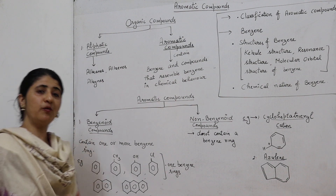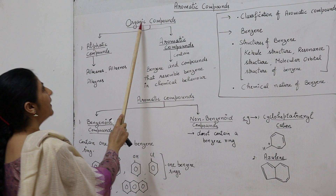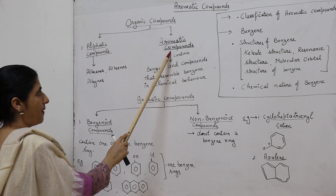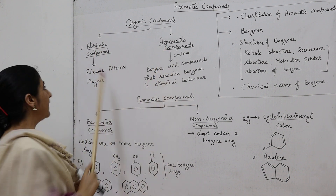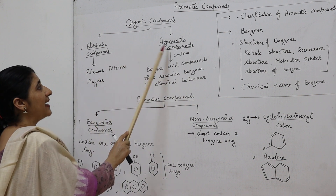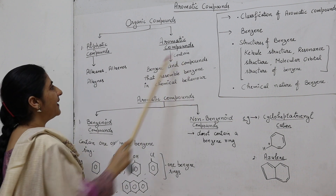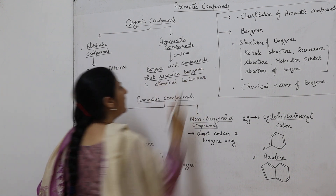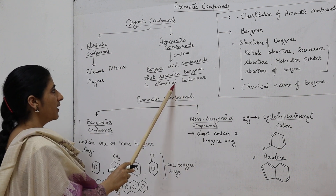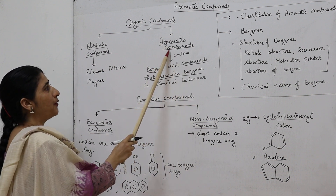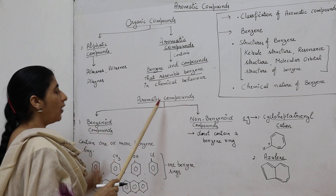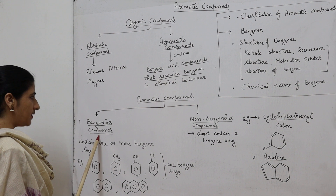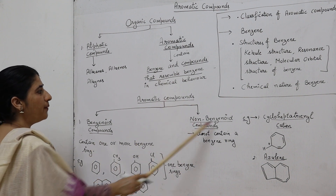In organic chemistry we generally deal with organic compounds, and organic compounds are of two types: aliphatic compounds or aromatic compounds. Aliphatic compounds refer to alkanes, alkenes, and alkynes. Whereas aromatic compounds are those compounds that contain benzene, and all those compounds that resemble benzene in chemical behavior. Depending upon whether the aromatic compounds contain benzene or not, aromatic compounds are of two types: benzenoid compounds and non-benzenoid compounds.